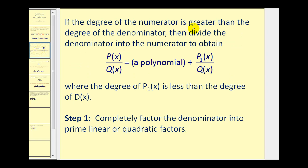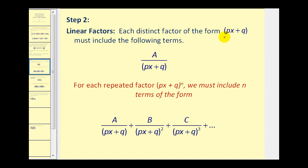First, if the degree of the numerator is greater than the degree of the denominator, we want to divide the denominator into the numerator to obtain a polynomial and a rational function where the degree of the numerator is less than the degree of the denominator. Once we have it in this form, we want to completely factor the denominator into prime linear or quadratic factors. For each linear factor, we'll have a numerator of a single variable A over the linear factor. And if the linear factor repeats, we would have to include additional fractions picking up each additional linear factor over a new numerator, until we've accommodated for all of the repeated linear factors.